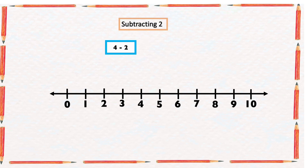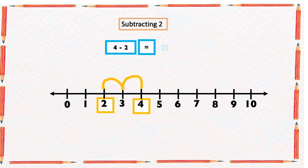4 minus 2 — with our number line, we're going to start from number 4 and count two numbers backward. One, two, and the arrow ended at 2, so 4 minus 2 will give us 2.